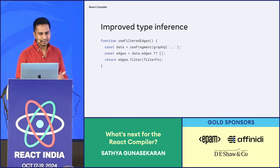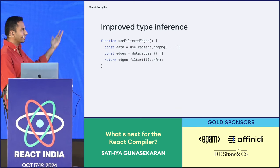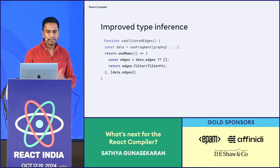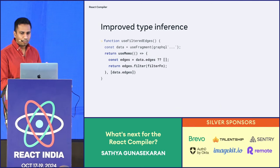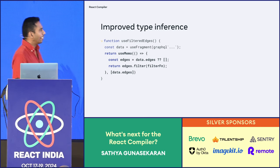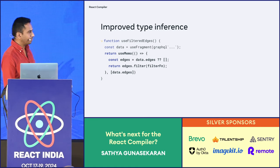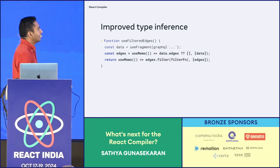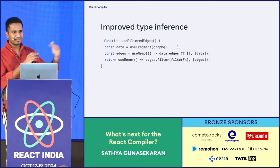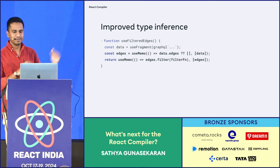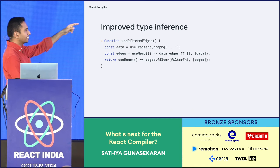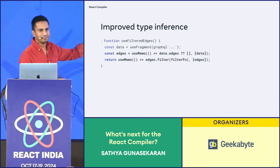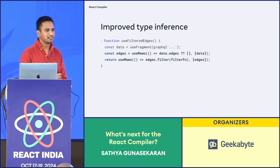Let's consider this simple hook. Like the previous example, it fetches some data, does some processing, and returns the value. One way to memoize this would be to combine the statements together, where the memoization block depends on data.edges. But we can do better by splitting the memo and memoizing each statement separately. If only edges changes, then only then do we need to rerun the filter. This is fine-grained memoization.